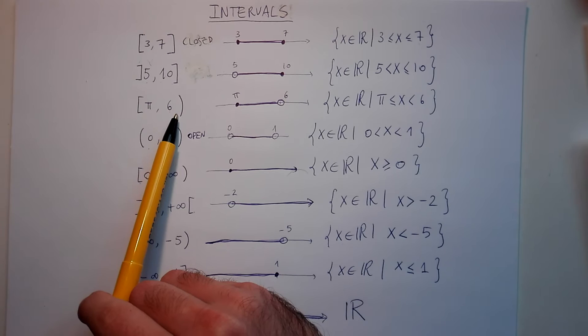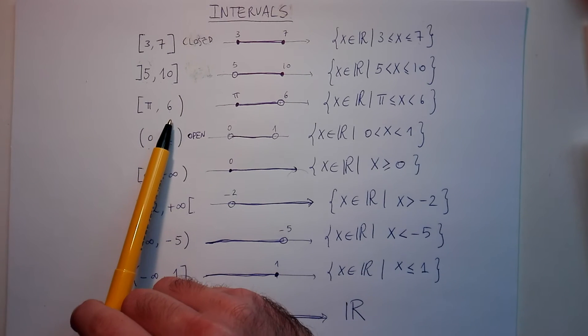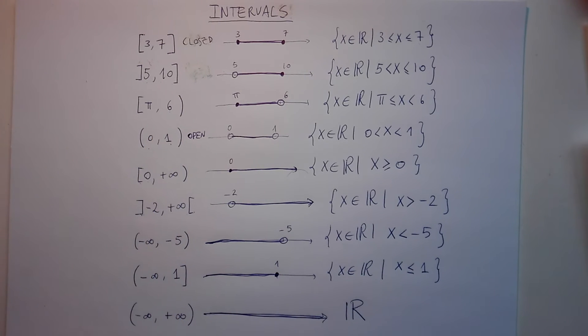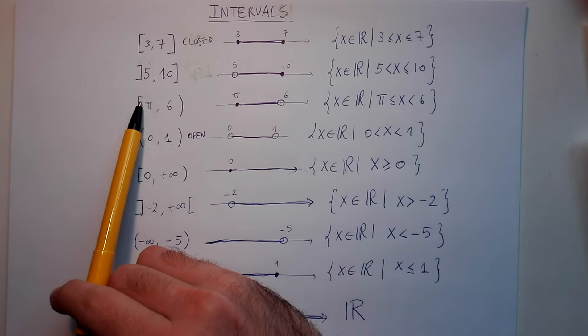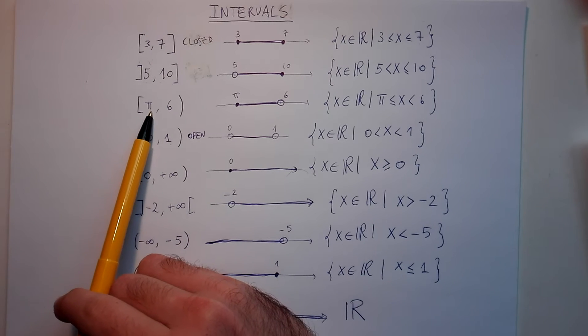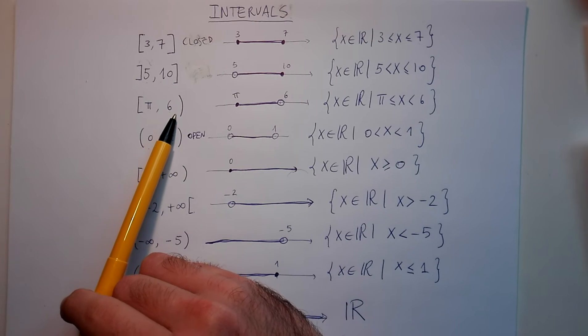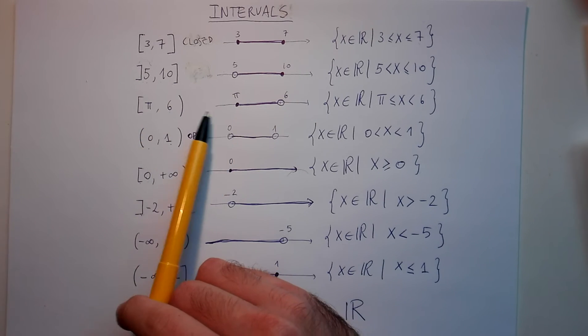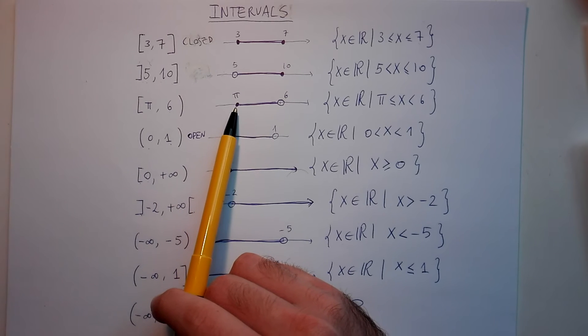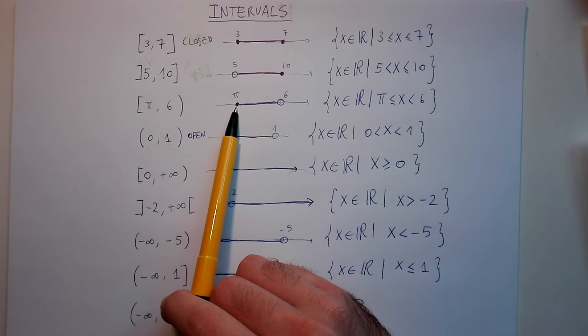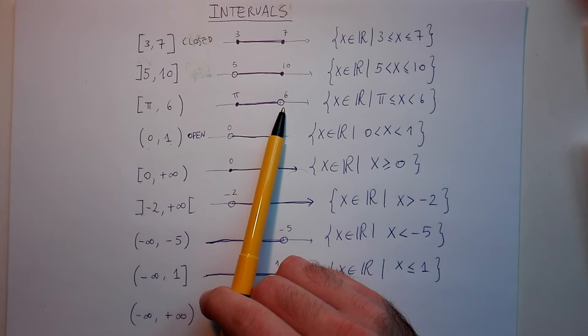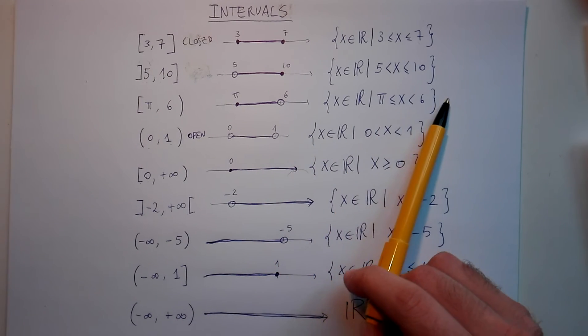The same thing can be done using a normal parenthesis. So if you write square bracket pi, then six, and then a normal parenthesis, that means you're not including six. So these are all the numbers between pi and six, pi included, six not included.